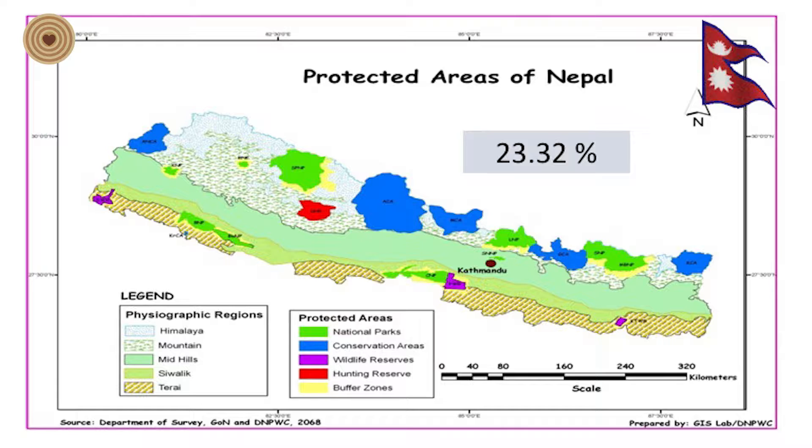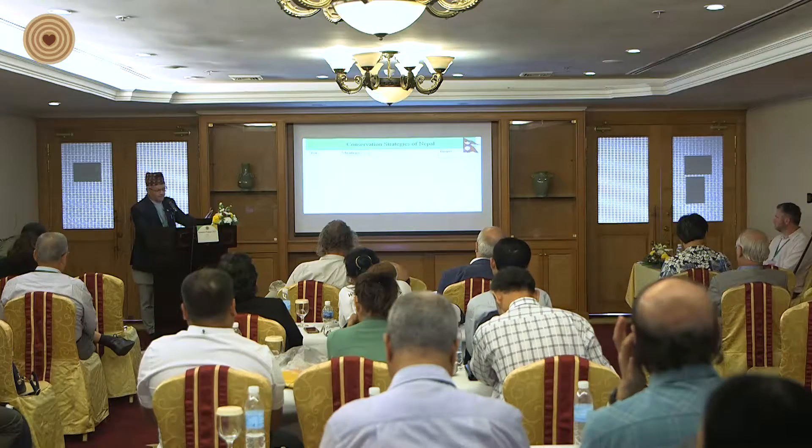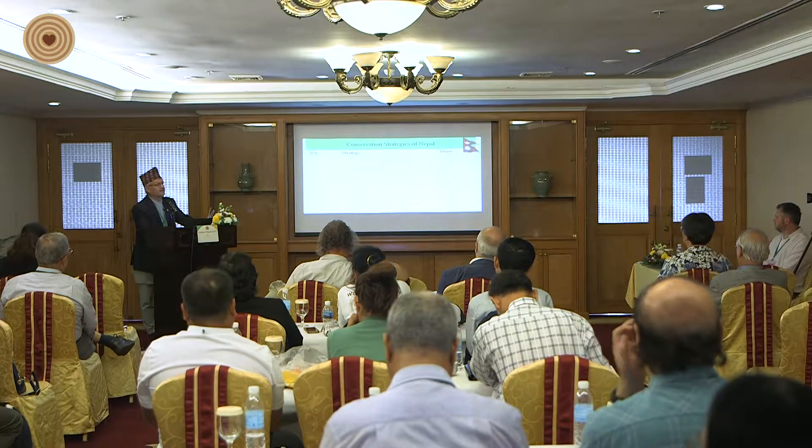Protected areas cover 23.32% of the total forest in Nepal. This reflects the conservation strategy of Nepal.